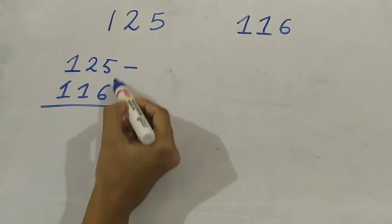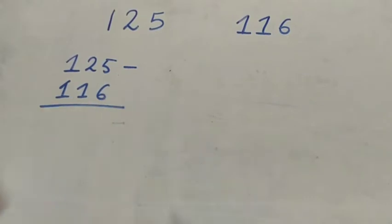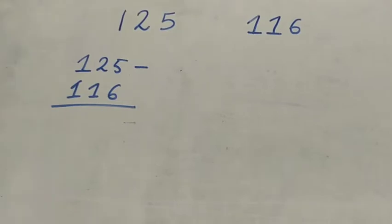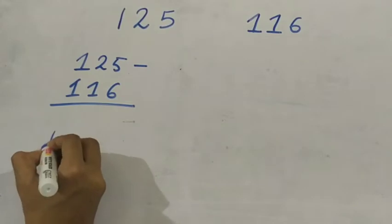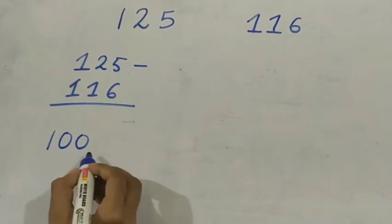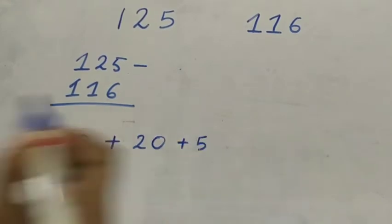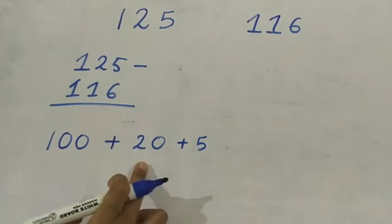Look here. Is it possible to subtract 6 from 5? No, it is not possible. So I will tell you another method to subtract numbers like this. First of all, I am going to write these numbers in another form. 125 is 100 plus 20 plus 5.